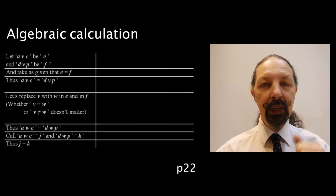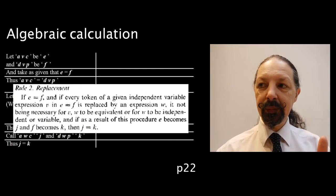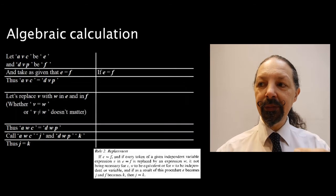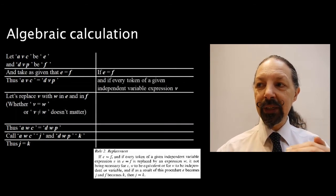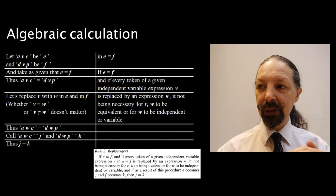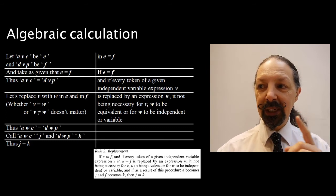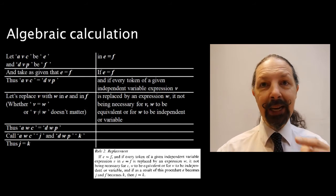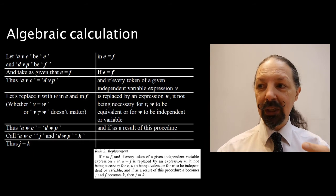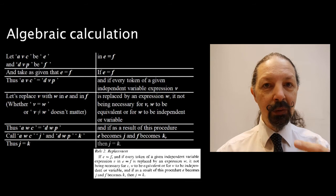Now, here's my articulation. Let's compare it with Spencer Brown's. If E equals F, and if every token of given independent variable expression V in E equals F is replaced by an expression W, it not being necessary for V and W to be equivalent, or for W to be independent or variable, and if as a result of this procedure E becomes J and F becomes K, then J equals K.